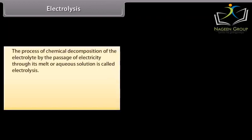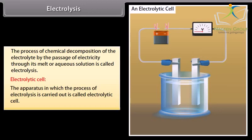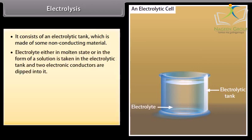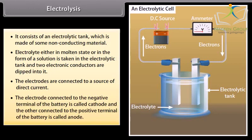Electrolysis. The process of chemical decomposition of the electrolyte by the passage of electricity through its melt or aqueous solution is called electrolysis. Electrolytic cell: The apparatus in which the process of electrolysis is carried out is called electrolytic cell. It consists of an electrolytic tank which is made of some non-conducting material. Electrolyte, either in molten state or in the form of a solution, is taken in the electrolytic tank and two electronic conductors are dipped into it. The electrodes are connected to a source of direct current. The electrode connected to the negative terminal of the battery is called cathode and the other connected to the positive terminal of the battery is called anode.